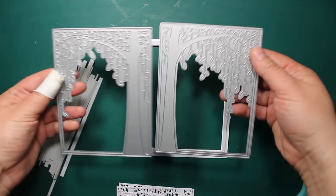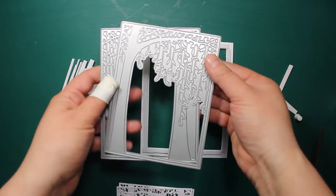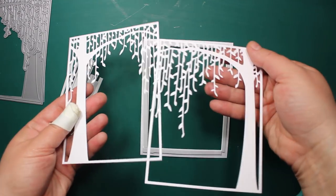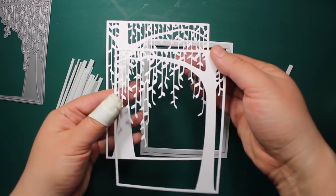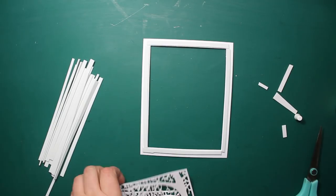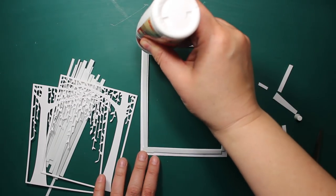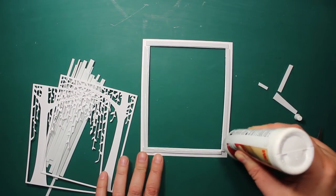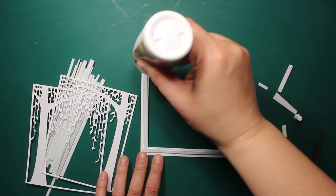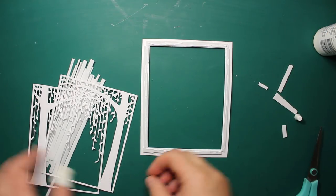Next, I am going to use these two Whipping Willow dies by Poppy Stamps. I will be attaching the first one on top of the foam layer. Notice that I am working on the wrong side of the frame and I am positioning all the die cuts face down.